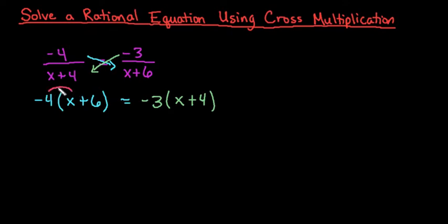We would use the distributive property to multiply the negative 4 into both of the expressions. So I would have negative 4x, and then negative 4 times positive 6 gives me negative 24. On the other side, we would do the same thing. We would distribute the negative 3, and I end up with negative 3x minus 12.